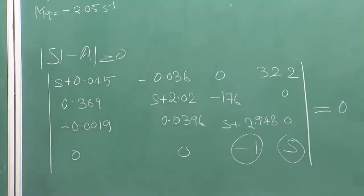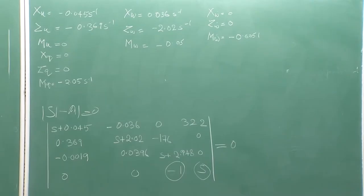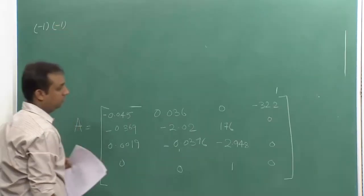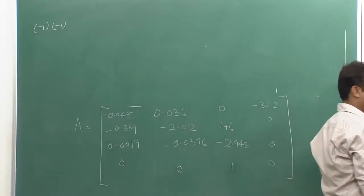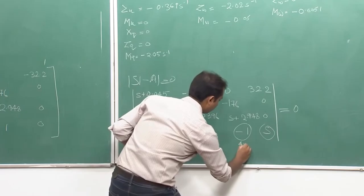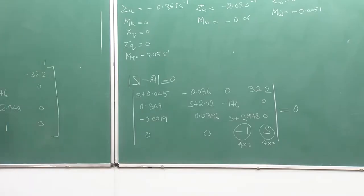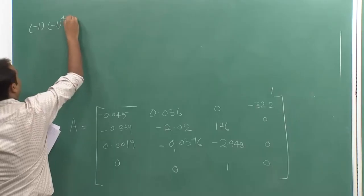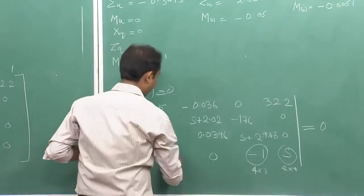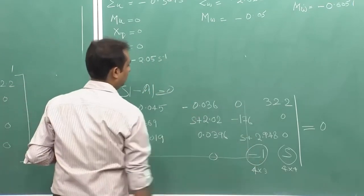I will be choosing two specific elements so that I only have to calculate the determinant of two sub-matrices. The general formula for calculating the determinant is: take the element, multiply by minus one to the power of the sum of its row and column position, then multiply by the determinant of the remaining sub-matrix after eliminating that row and column.